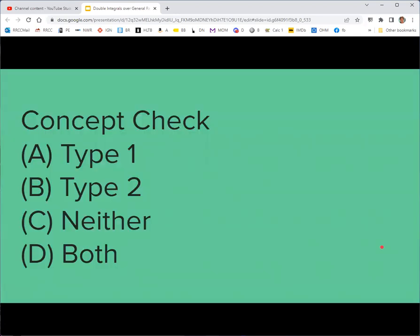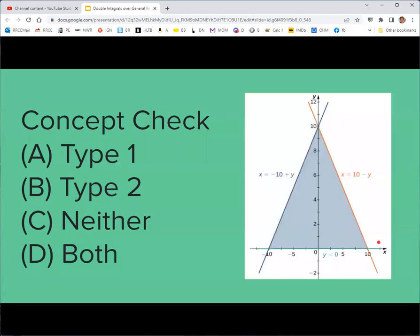All right, so we're going to do some concept check questions where we show you a region, a two-dimensional region, and then you try to identify it as type 1, type 2, neither, or both.